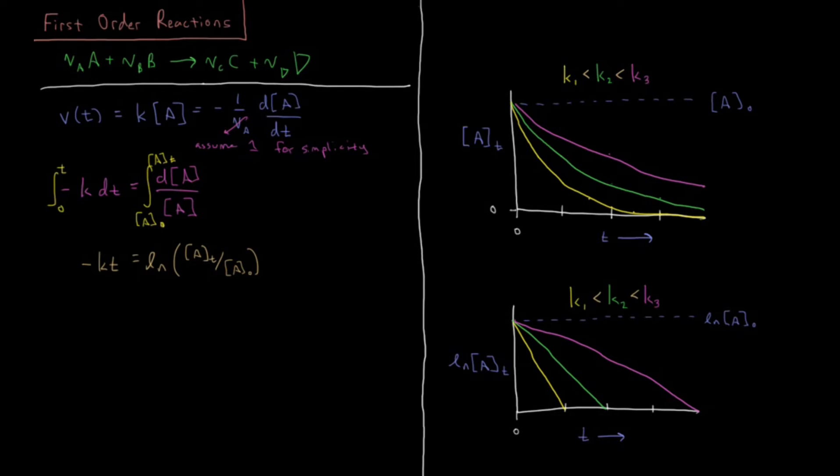If we take both sides to the power of E, we end up getting E to the minus KT equals A of T over A0. If we multiply both sides by A0, we have what we were finally looking for which is the concentration of A as a function of time. For a first order reaction that is equal to the initial concentration A0 times E to the minus KT. We took our rate law and did separation of variables and integrated it to get our time dependent concentration. So this is called an integrated rate law.